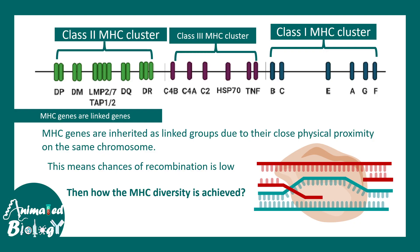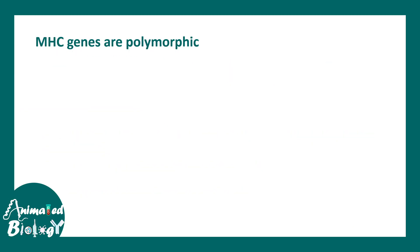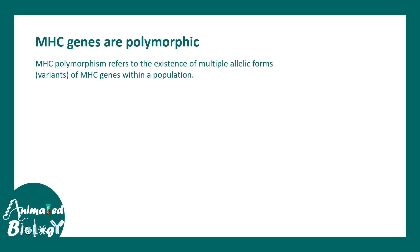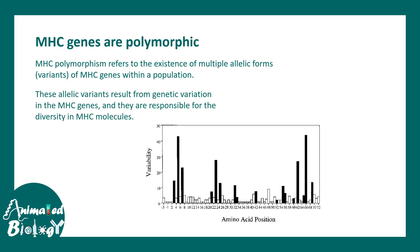The answer lies in polymorphism. MHC genes are highly polymorphic — polymorphism refers to the existence of multiple allelic forms of MHC genes within a particular population. This is a population-level concept, not an individual-level concept. These allelic variations result from small genetic variations in the MHC locus. Peptide sequencing shows that the variability in residues is specifically located in distinct locations, not haphazardly distributed.